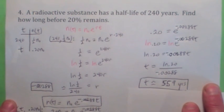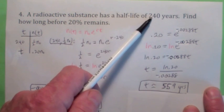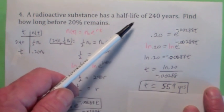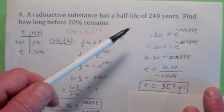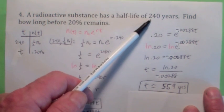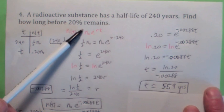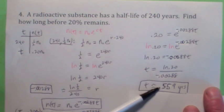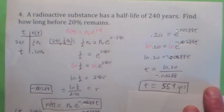Does that make sense? If the half-life is 240 years, repeating it again takes you from 50% to 25% — so in about 480 years you'd have 25% left. It makes sense that 20% would take around 559 years. Seems like a reasonable answer.